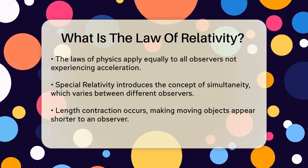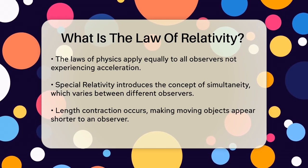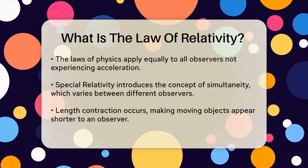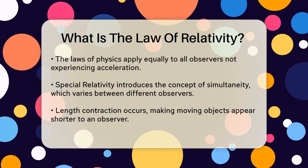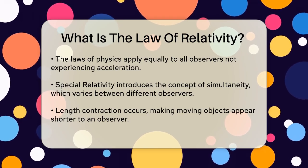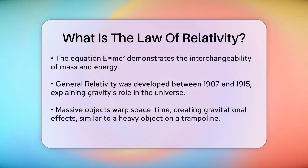And the famous equation E equals MC squared, which shows that mass and energy are interchangeable. Now let's move on to general relativity, which Einstein developed between 1907 and 1915. This theory explains how gravity fits into the picture.